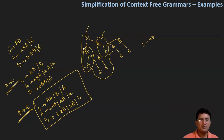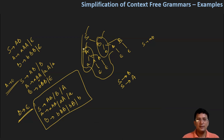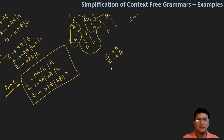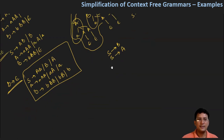However, here you can see two unit productions. One is S produces B, and another is S produces A. If you want, you can remove these unit productions S produces B and S produces A. Wherever S produces A is written, you attach all the productions starting from A.